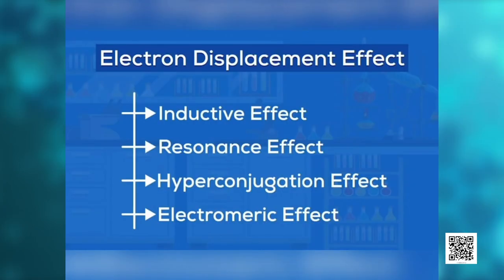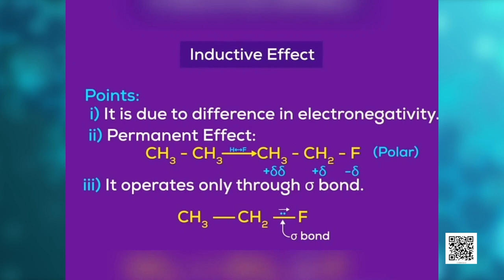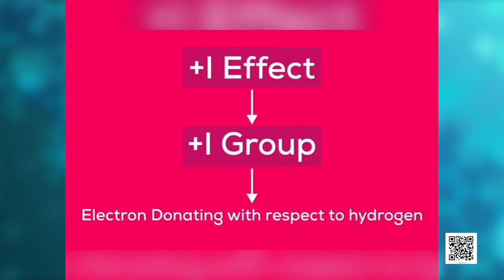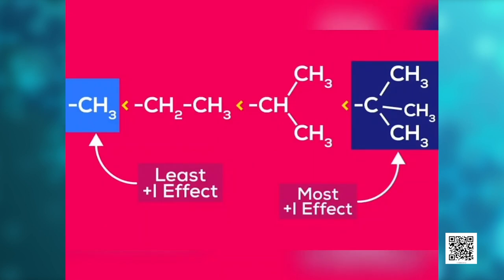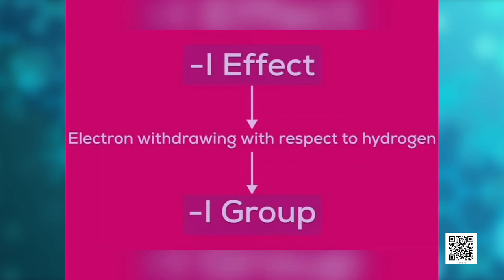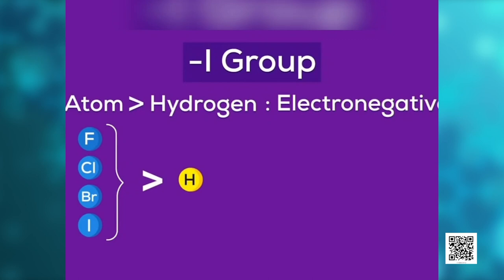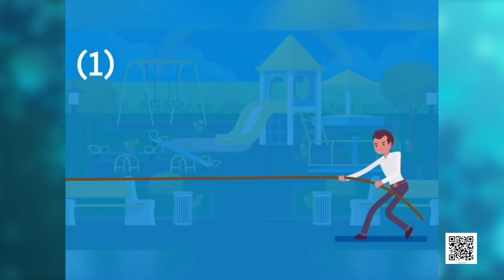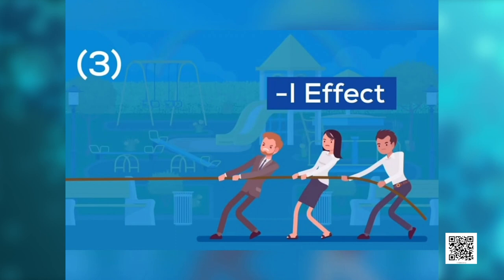The inductive effect is a type of electron displacement effect. It arises due to polarization in a sigma bond caused by the polarization of an adjacent sigma bond. It is a permanent effect operating only through sigma bonds. It is of two types: plus I effect, shown by alkyl groups — primary alkyl groups show the least and tertiary alkyl groups show the most plus I effect; and minus I effect, shown by atoms more electronegative than hydrogen, such as fluorine, chlorine, bromine, and iodine. More electron-withdrawing groups lead to a greater minus I effect.